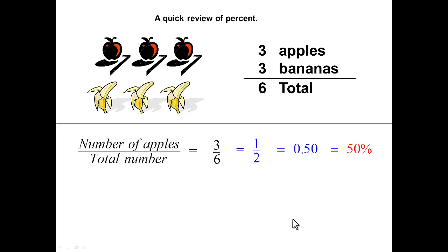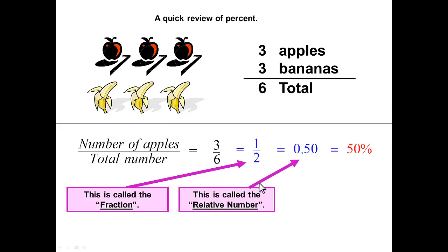Now for some terminology. The reduced form of the number is still just called the fraction. We could say that one half of the fruit is apples. The decimal number is called the relative number. Think of this as how the apples relate to the rest of the fruit. It's always written as a decimal. And of course the last form is the percent. The percentage of fruits that are apples is fifty percent.